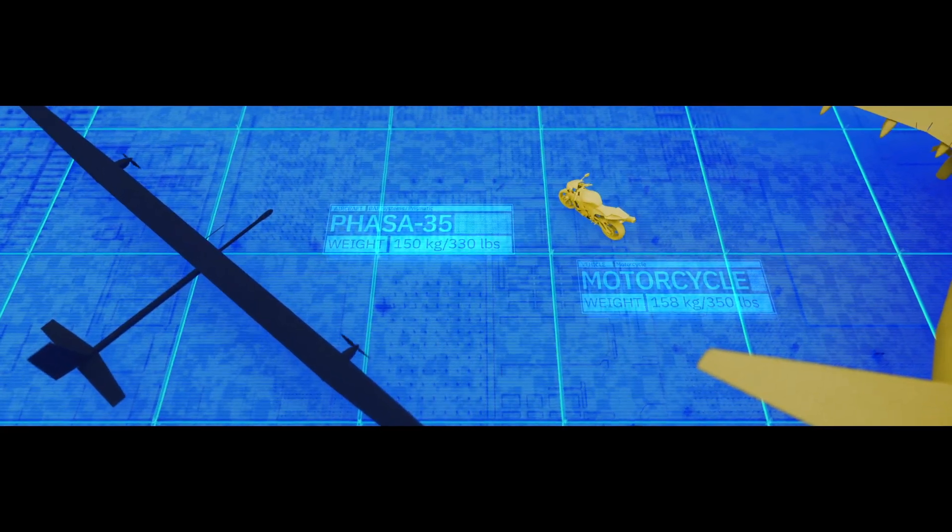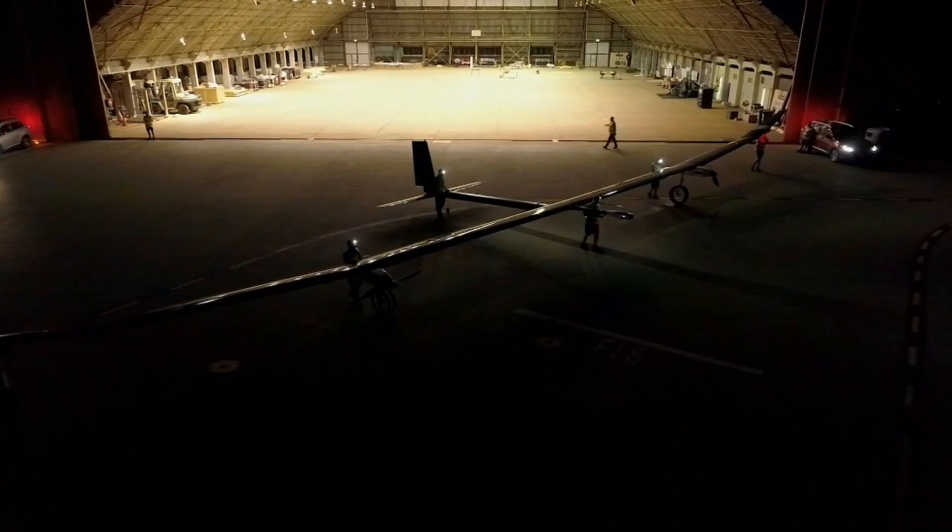With the wingspan of a 737, but the weight of a motorcycle, FASA 35 is truly one-of-a-kind.